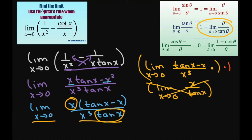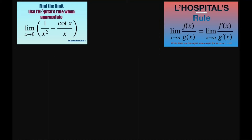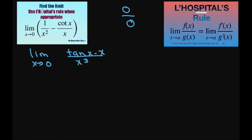From there we simplify further to get the limit as x approaches 0 of tan of x minus x divided by x cubed. This has the indeterminate form of 0 divided by 0.